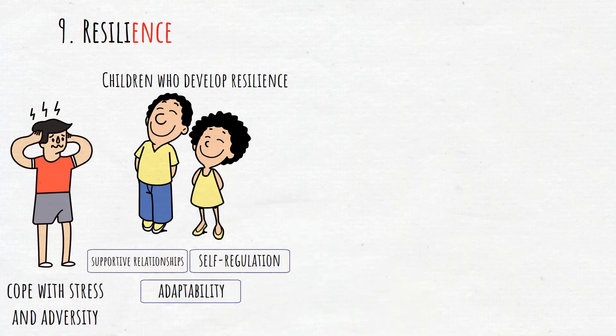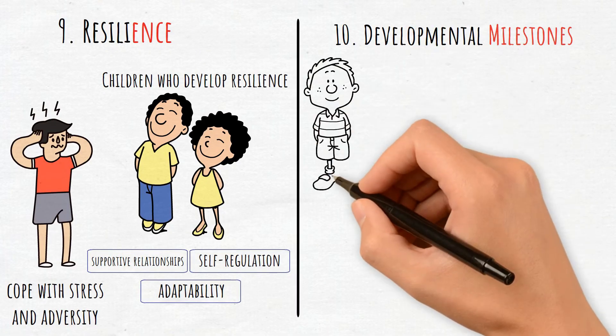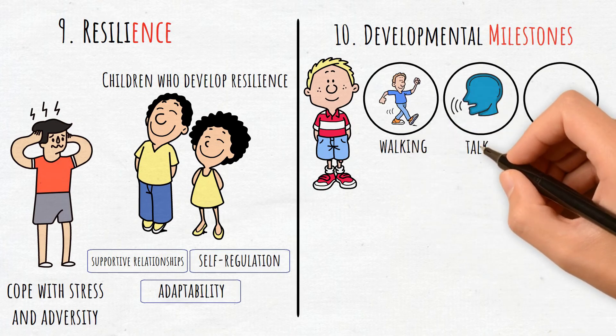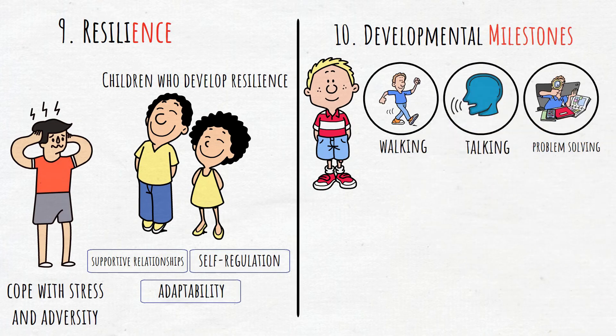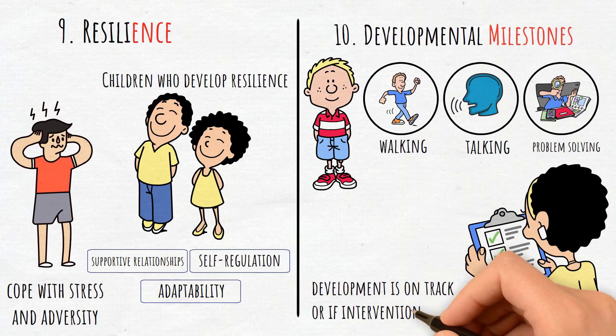10. Developmental Milestones. These are behaviors or skills typically seen in children as they grow, such as walking, talking, or problem-solving. Tracking milestones helps in assessing if development is on track or if intervention is needed.